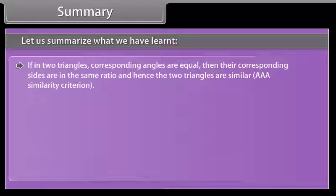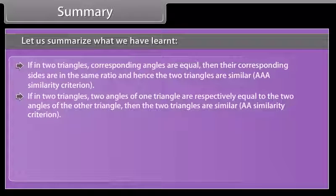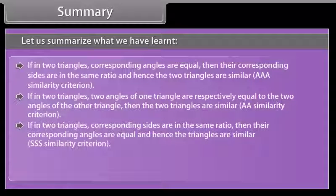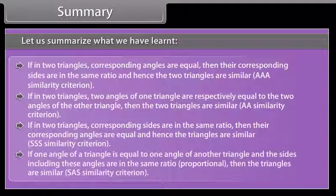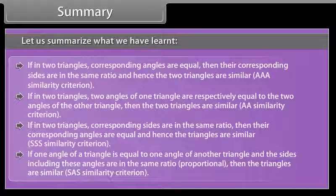If in two triangles corresponding angles are equal, then their corresponding sides are in the same ratio and hence the two triangles are similar by AAA similarity criterion. If two angles of one triangle are respectively equal to the two angles of the other triangle, then the two triangles are similar (AA similarity criterion). If in two triangles corresponding sides are in the same ratio, then their corresponding angles are equal and hence the triangles are similar by SSS similarity criterion. If one angle of a triangle is equal to one angle of another triangle and the sides including these angles are proportional, then the triangles are similar by SAS similarity criterion.